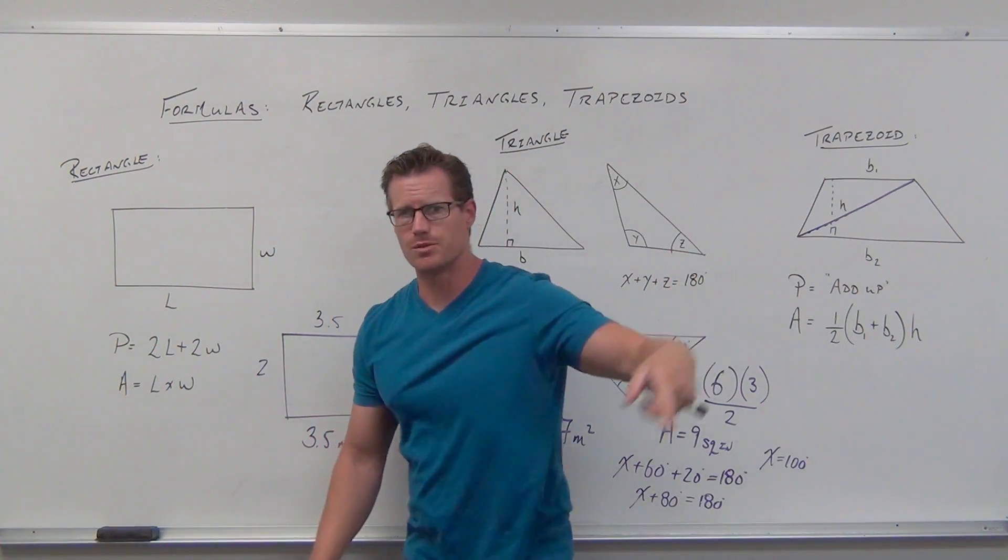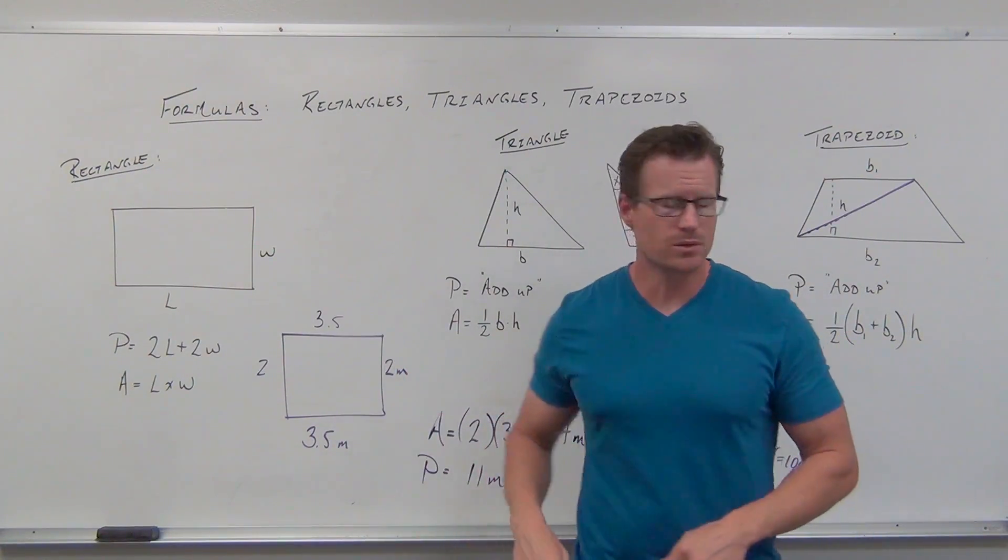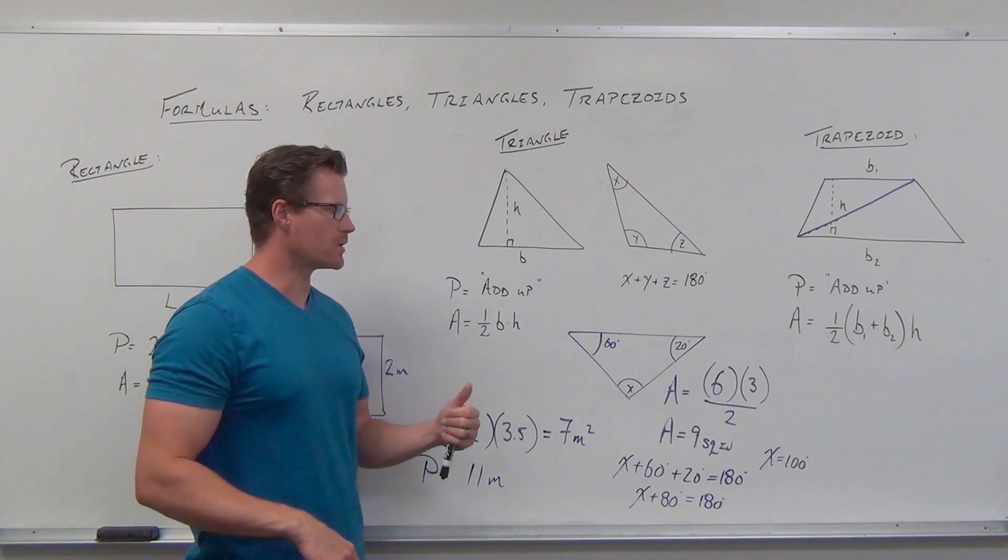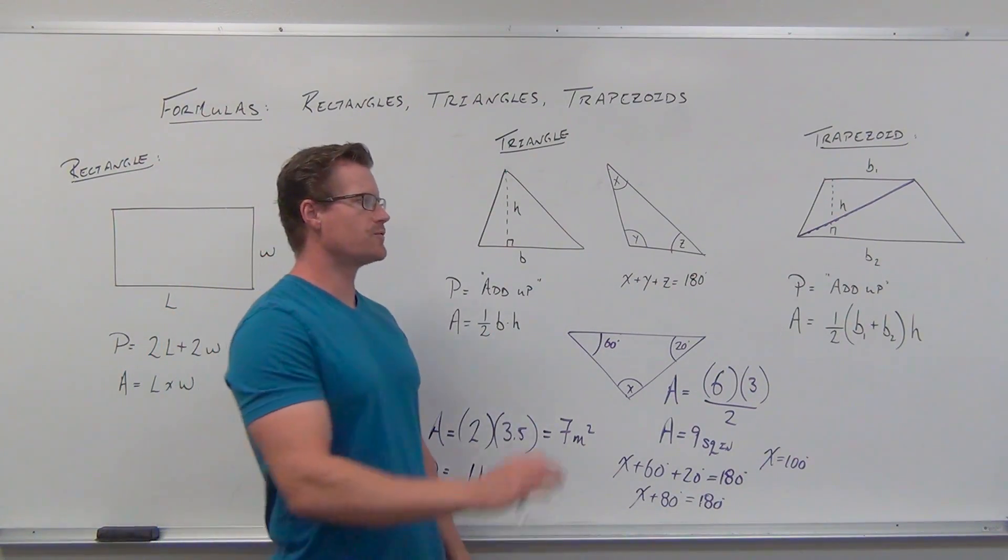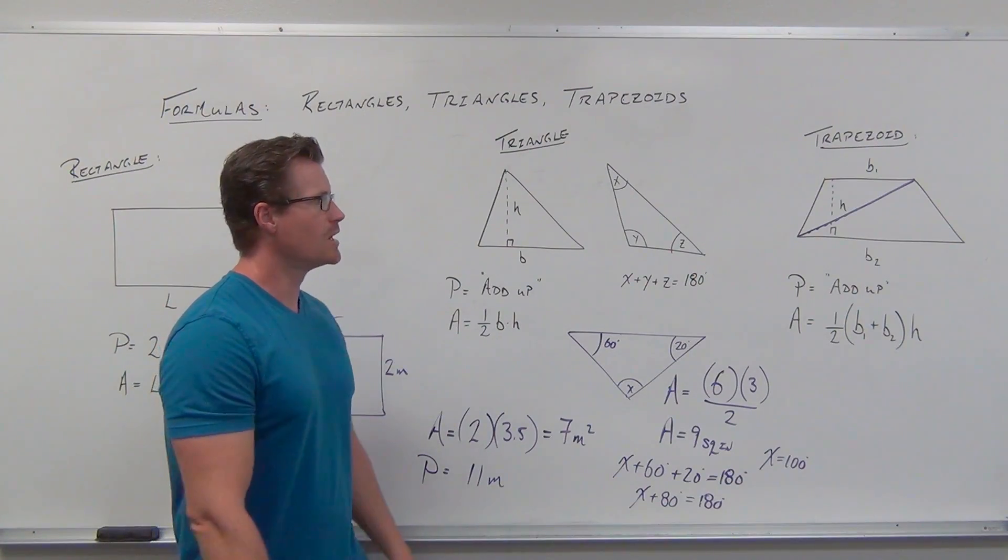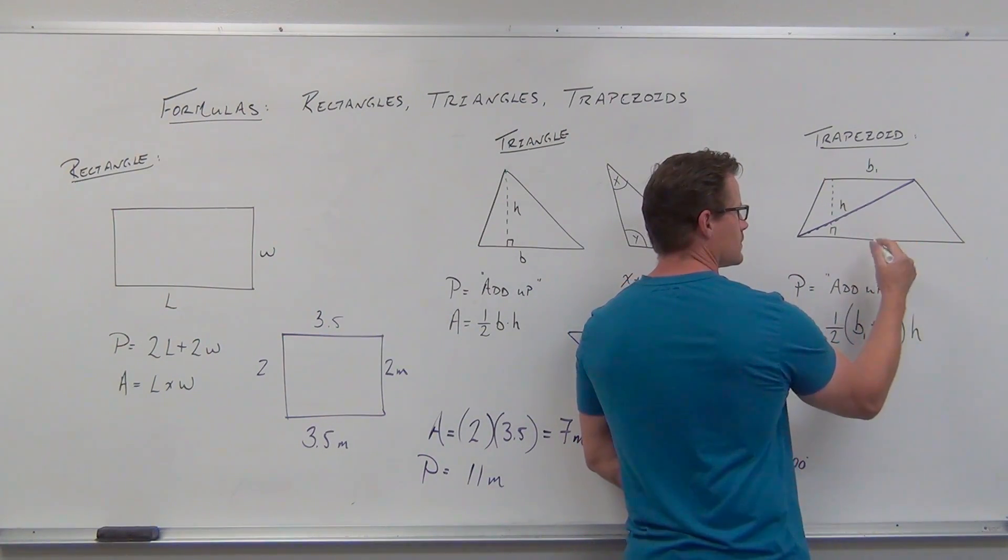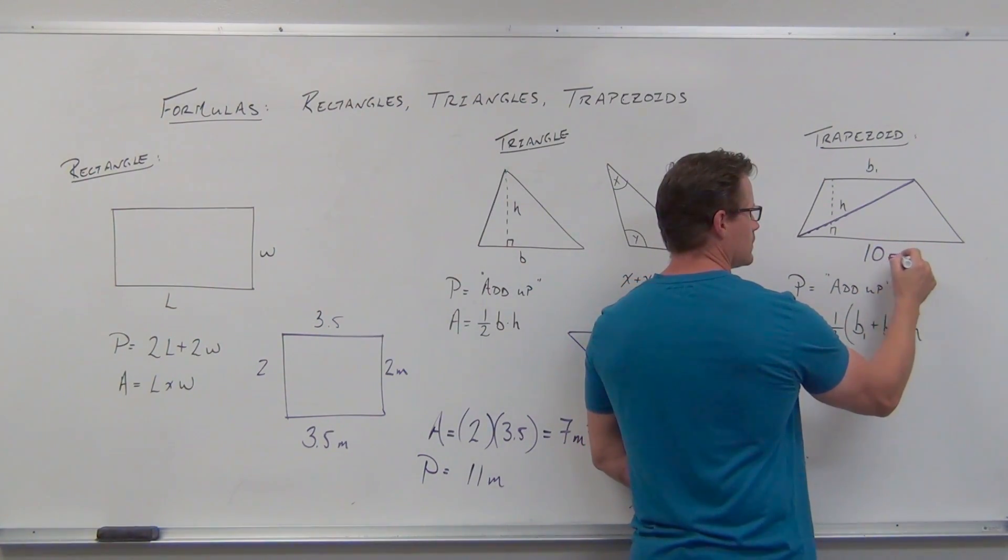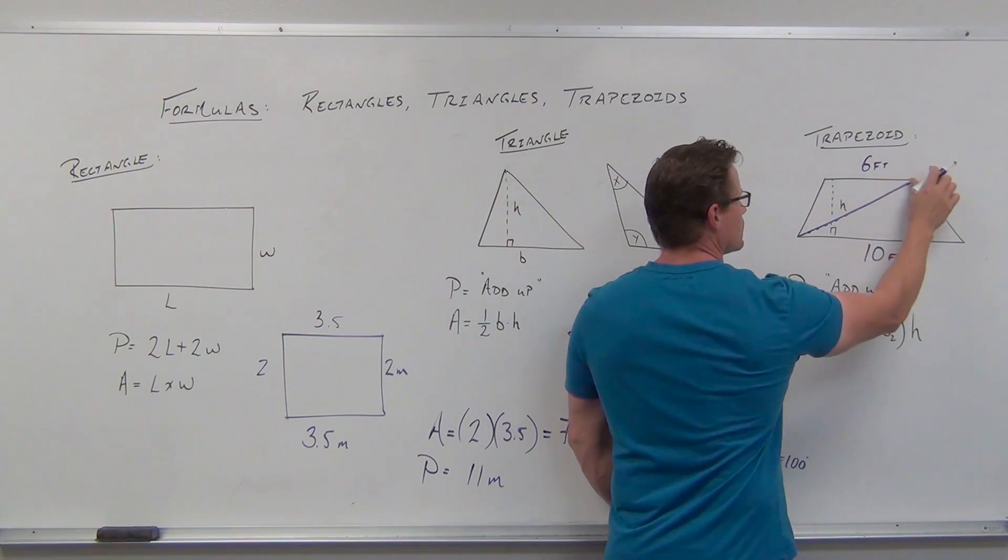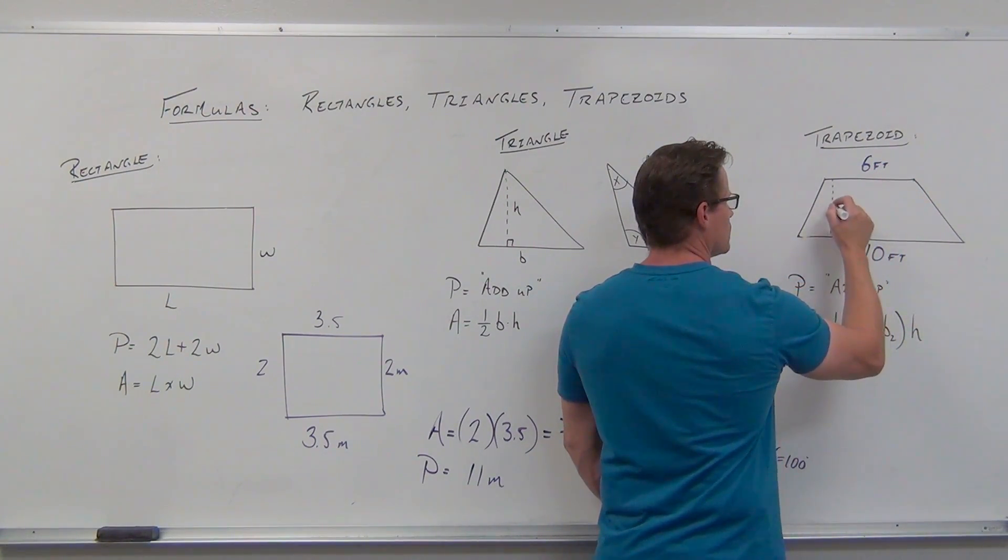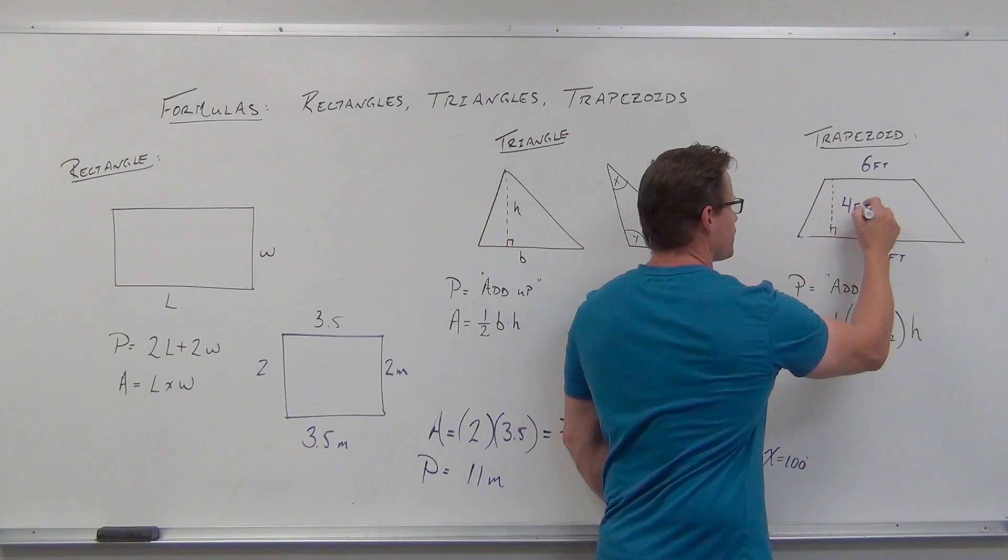So far we know perimeter is the outside of an object and area is the surface a figure covers. We know how to find both for rectangles. For triangles, we multiply and divide by 2, and angles add to 180 degrees. Our last example is a trapezoid, which works similar to triangles. Let's say we have a trapezoid with base 2 of 10 feet, base 1 of 6 feet, and height of 4 feet.